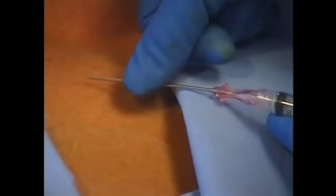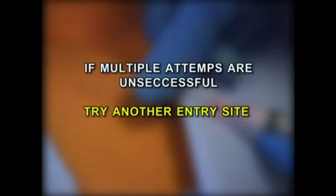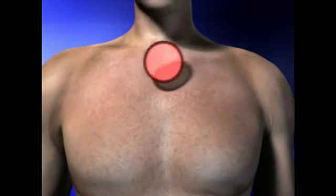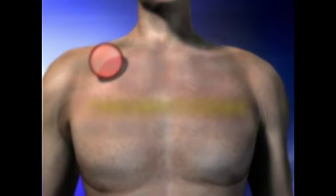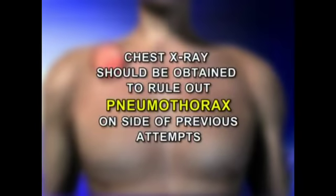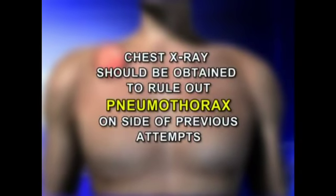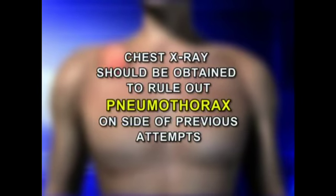If multiple attempts are unsuccessful, it is often wise to try another entry site. Please remember that before switching to another side of the chest or neck for a second attempt, a chest x-ray should be obtained to rule out a pneumothorax on the side of the previous attempt. Of course, certain emergent conditions may preclude this.